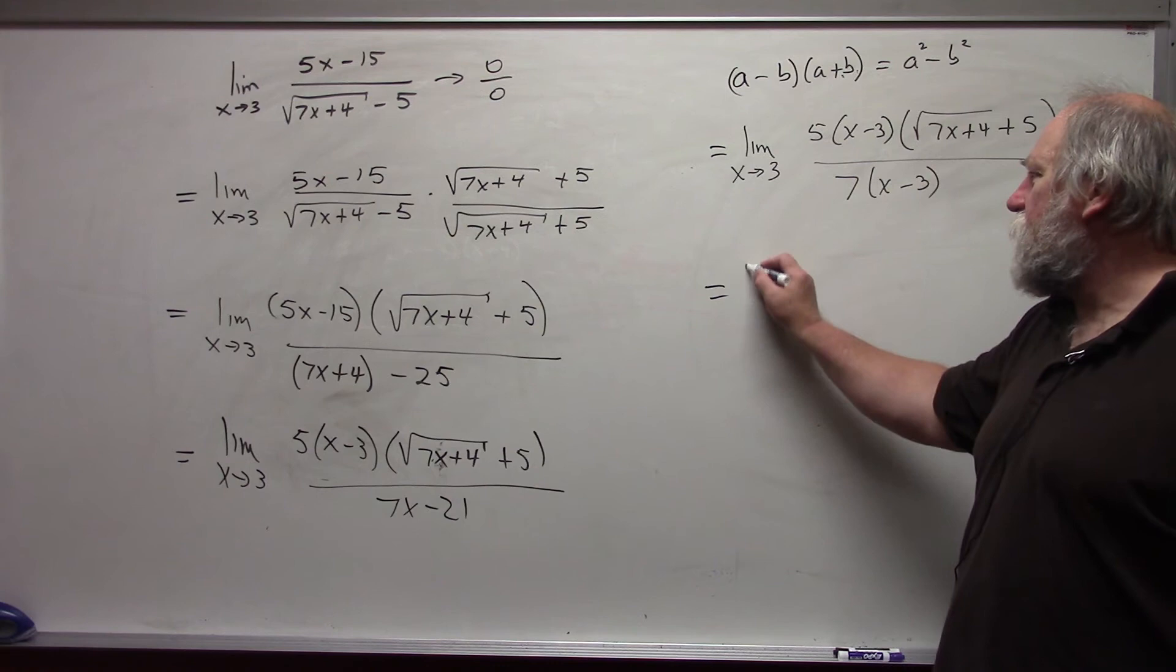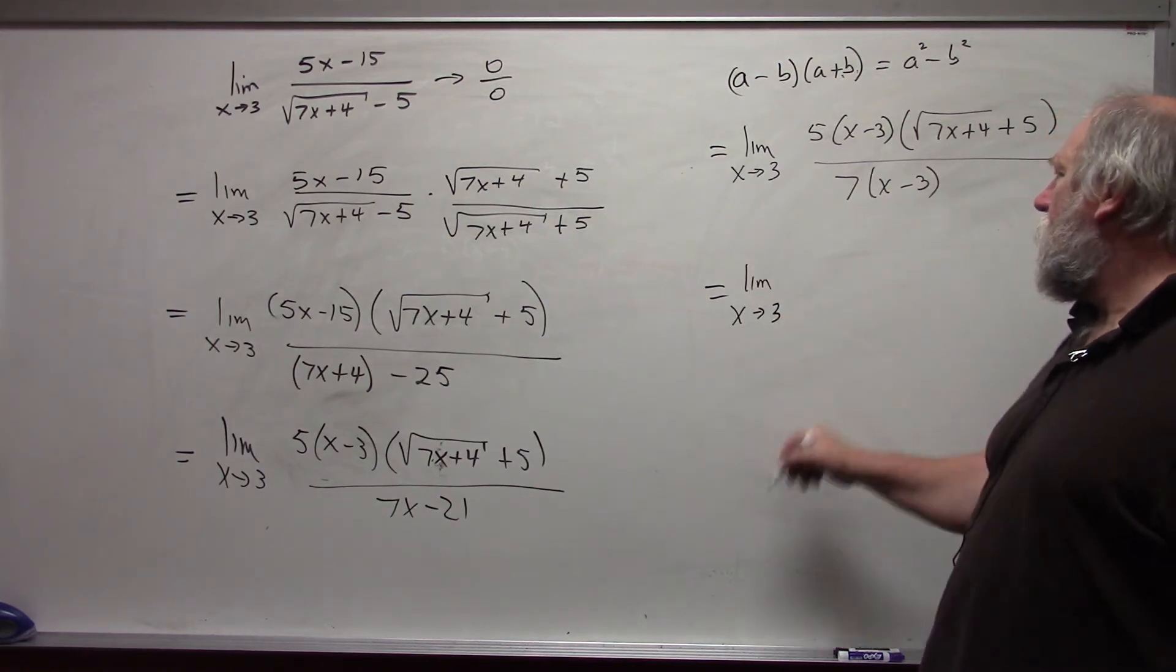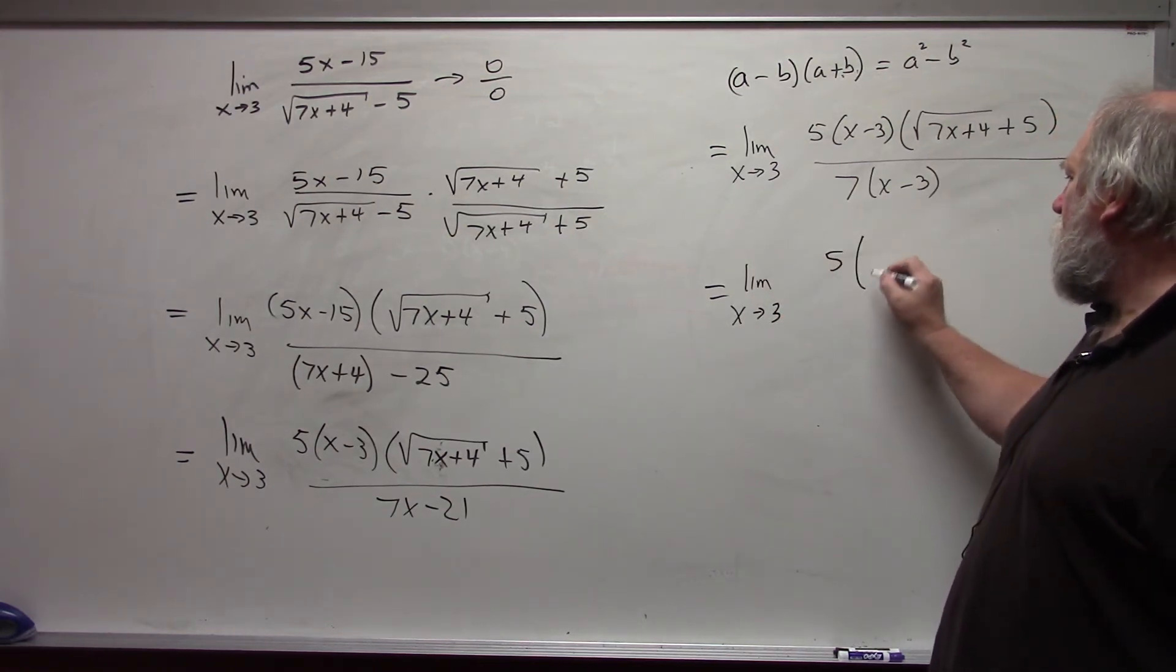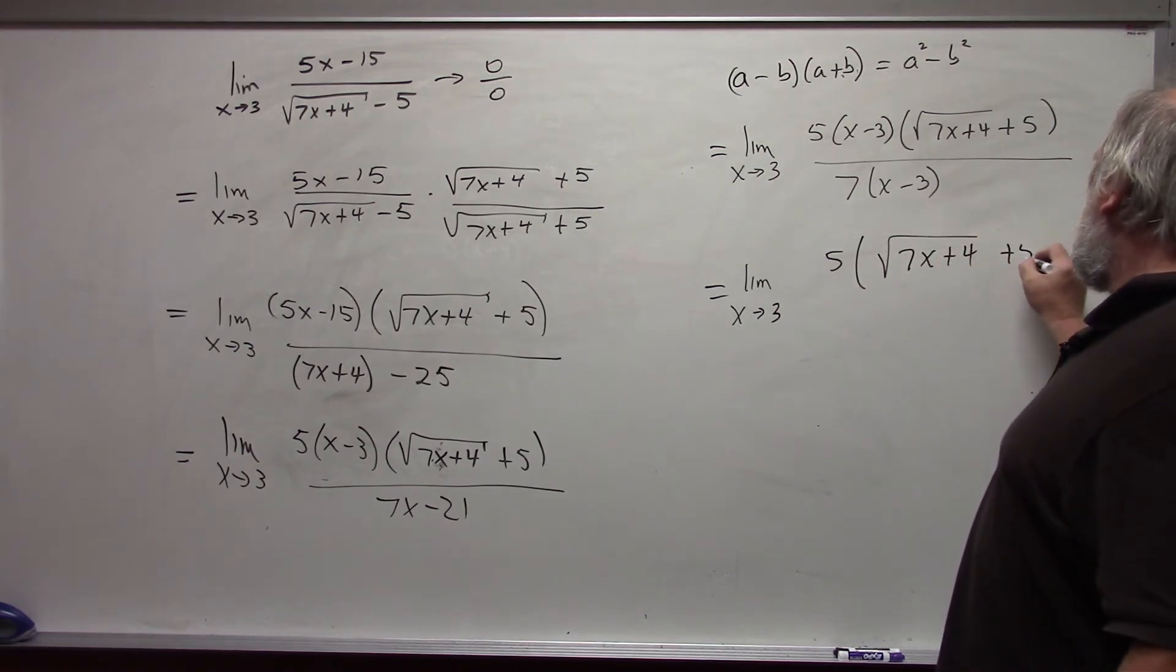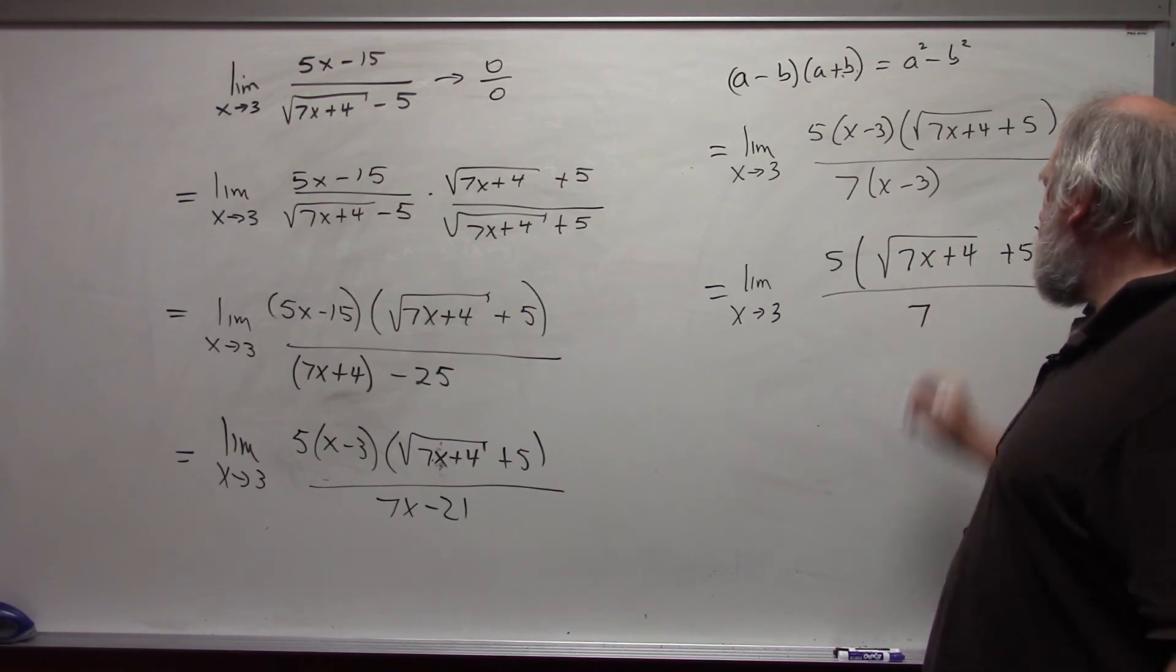5 times x minus 3, square root of 7x plus 4 plus 5, all over 7 times x minus 3. Again, at this point, we can reduce 5 times the quantity square root of 7x plus 4 plus 5 over 7.